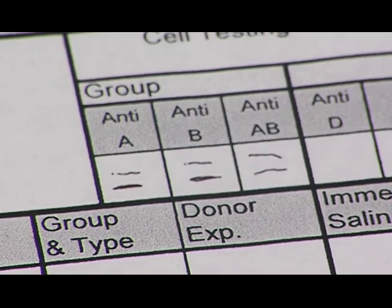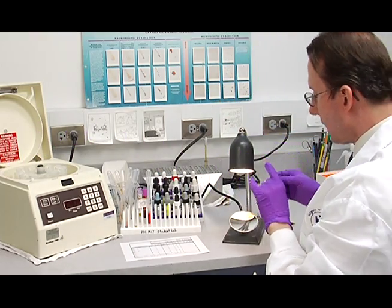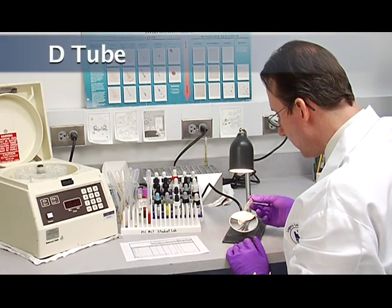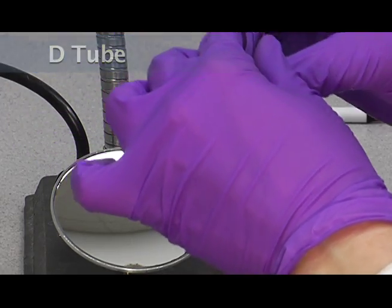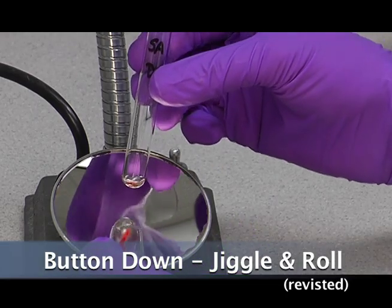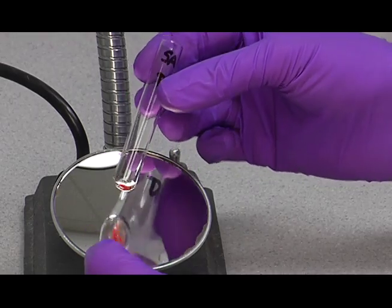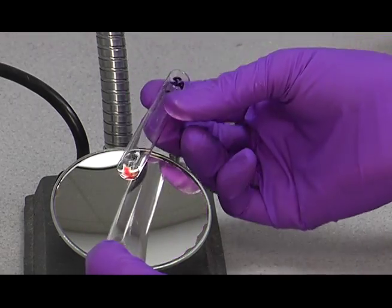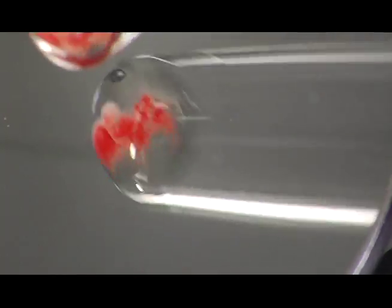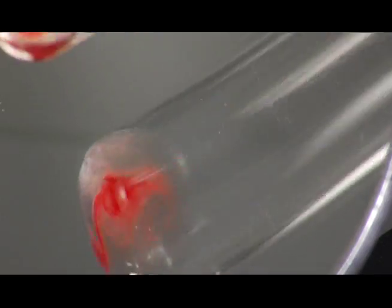And go on to the next tube, which is the D-typing. This is a technique that works well for left-handed individuals. We're going to put the button completely over on the other side opposite the mirror, and a jiggle and rolling it down like this.